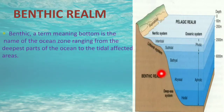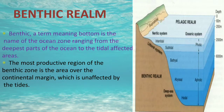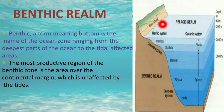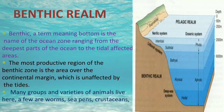The most productive region of the benthic zone is the area over the continental margin, which is unaffected by the tides. As shown in the diagram, the continental margin area is this region — it is the productive region of the benthic zone. Many varieties of animals live here, including worms, sea pens, crustaceans, sea stars, and protozoa.